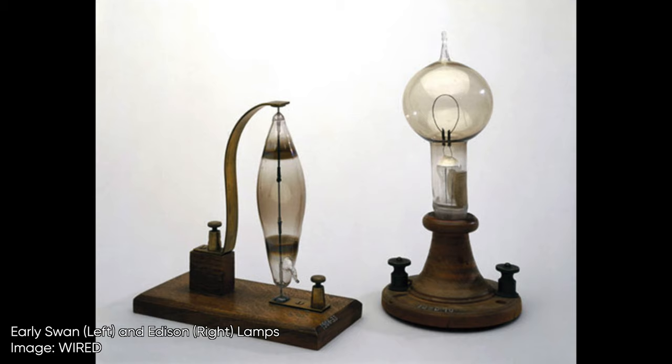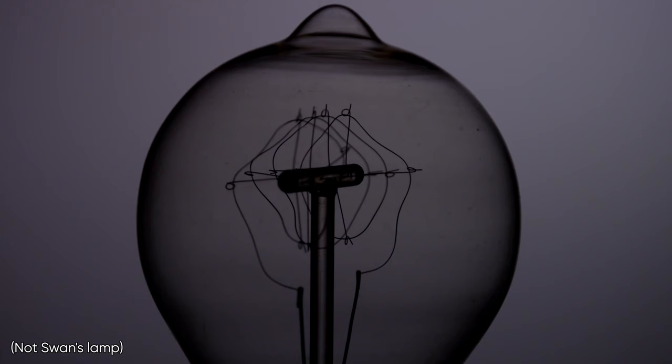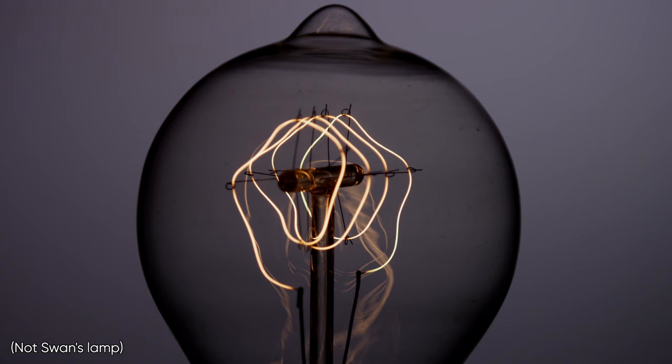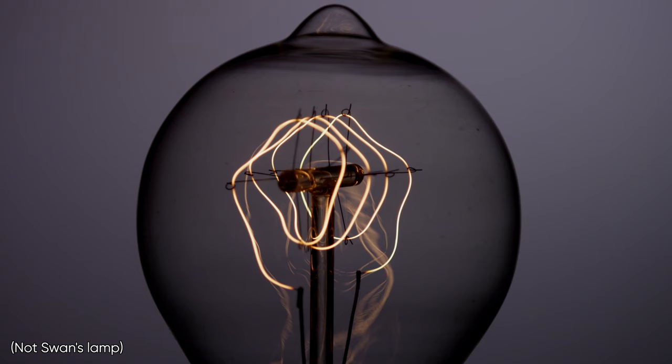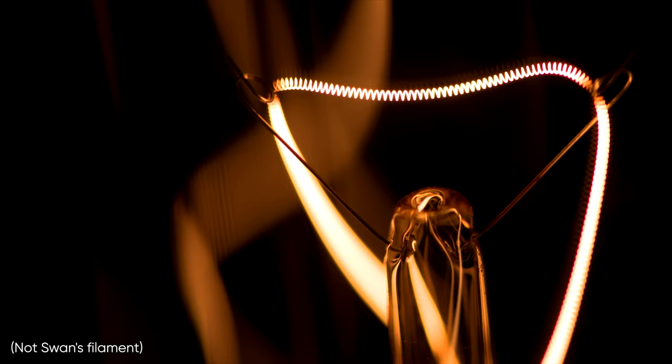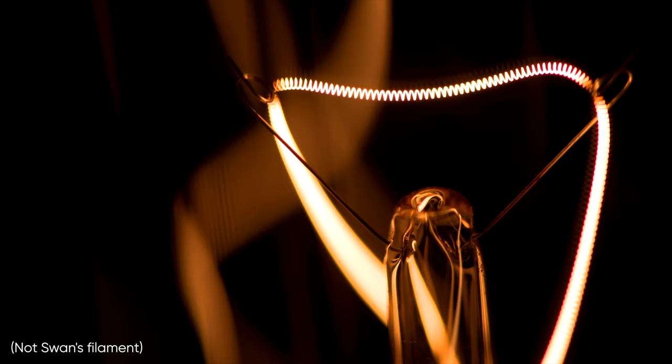In 1878, Joseph Swan came up with a lamp that used a carbonized cotton thread inside a glass bulb with the air removed. The first public demonstration in December 1878 was a failure, but he succeeded the next month in January 1879. This lamp was able to stay lit for about 40 hours.